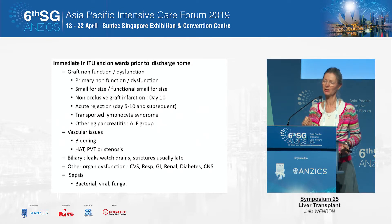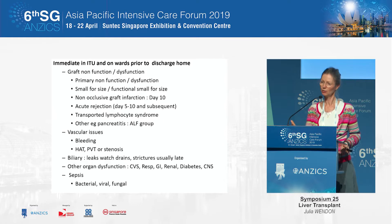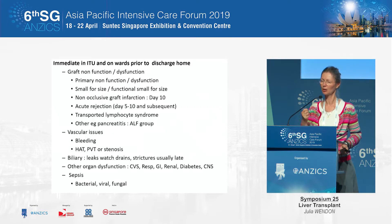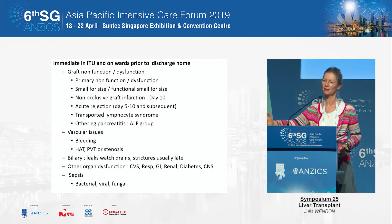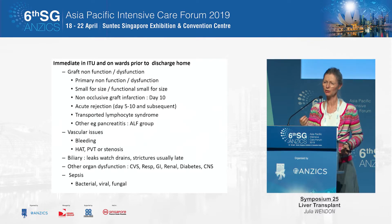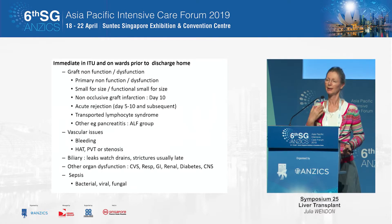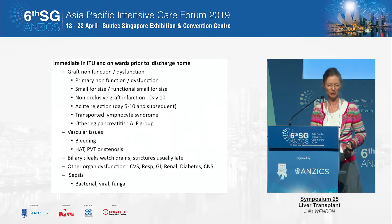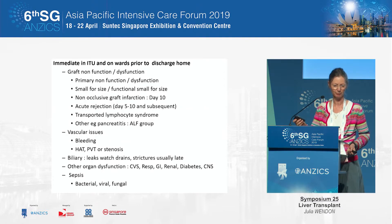Primary graft non-function is vanishingly rare. Dysfunction — a transaminitis greater than 1,000 — is moderately common but increasingly rare with good donor and recipient care and ex vivo liver perfusion systems. Small-for-size is very rare now with living-related donation. Non-occlusive graft infarction is rare but must be considered: at day 10 you get a transaminitis, it's not rejection, you do a CT angiogram, vasculature is patent but the liver is dying — those patients need re-transplantation. Acute rejection is relatively common, particularly in fit, healthy patients — routine transplants may reject at day 5, whereas those with ongoing multiple organ failure won't reject until day 10 or 14. With cross-blood-group transplants, think about passenger lymphocyte syndrome if you see transaminitis with a drop in haemoglobin.